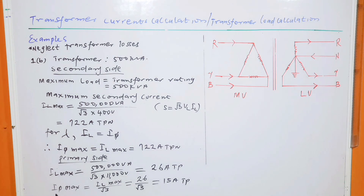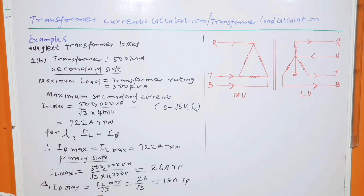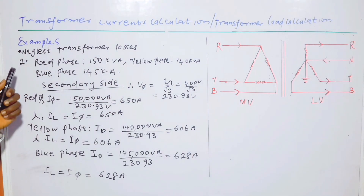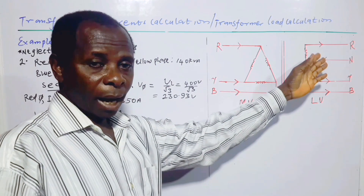For the delta-connected primary, the phase current equals the line current divided by √3. Applying this gives a maximum primary phase current of 15 amperes.